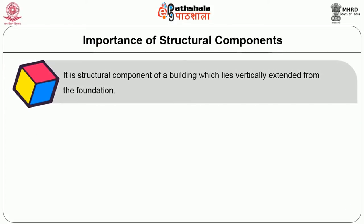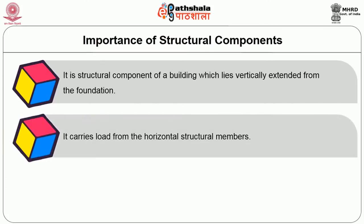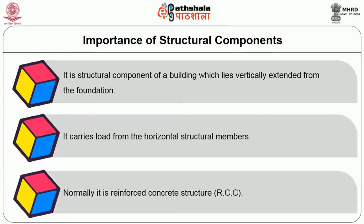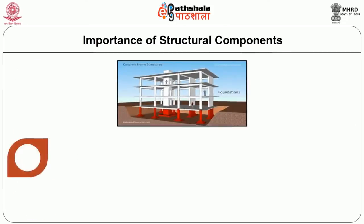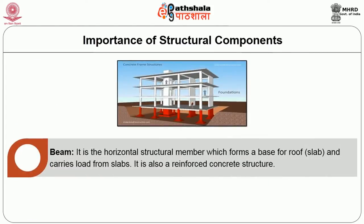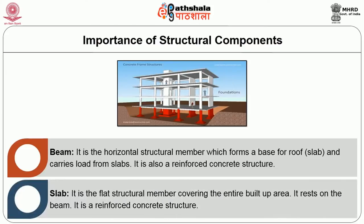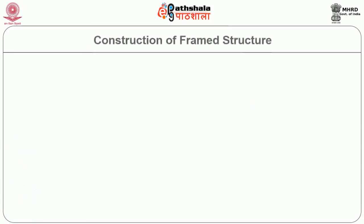A column is the structural component of a building which is vertically extended from the foundation. It carries the load from the horizontal structural members. Normally it is a reinforced concrete structure. A beam is the horizontal structural member which forms the base for the roof and carries the load from the slabs. It is also a reinforced concrete structure. The slab is a flat structural member covering the entire built-up area. It rests on the beams and is also a reinforced concrete structure.